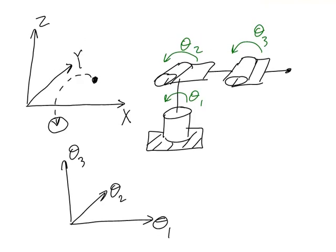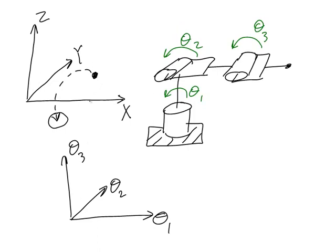Every point in X, Y, Z space has at least one point on the theta 1, theta 2, theta 3 space that it corresponds to. When we transform a point from theta 1, theta 2, theta 3 space to X, Y, Z space, we're doing forward kinematics.